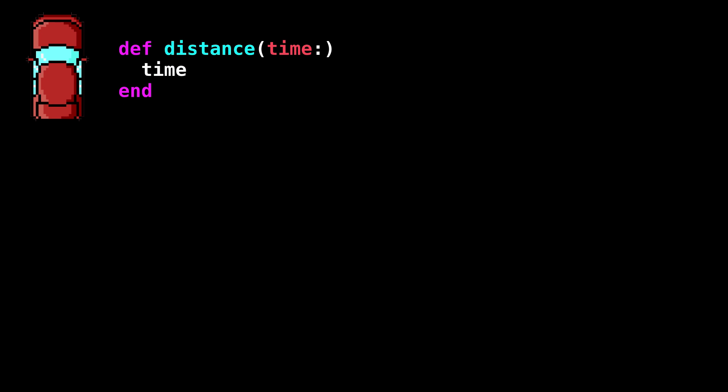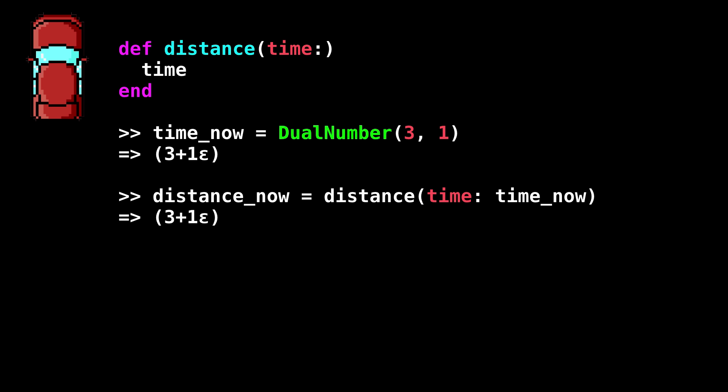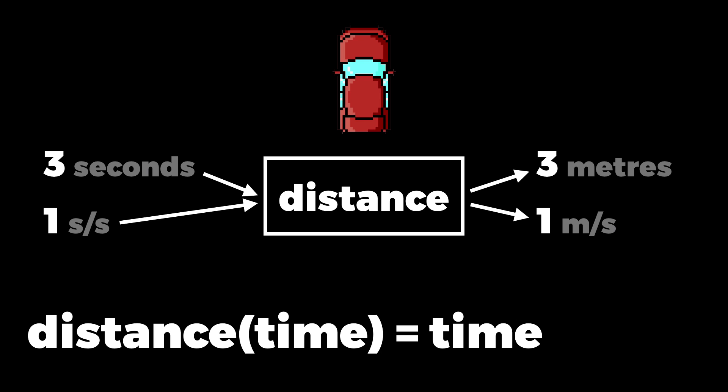So for the red car, where the distance is just equal to the time, we already have something that works. We make a value of three with rate of change one, and when we call the distance function with it, we get out three with a rate of change one. That means three metres, one metre per second. And that's the right answer for this very simple function where distance is the same as time.